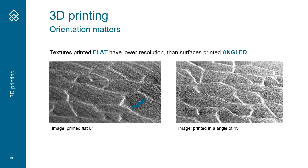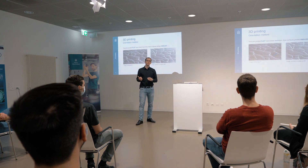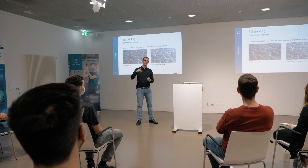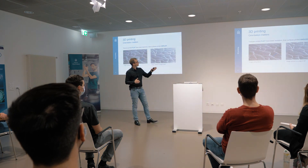Here is another example with a stone structure. If printed flat on the powder bed you can clearly see the layers step by step. But if you print the same texture at a 45-degree angle, there are no noticeable layers visible.